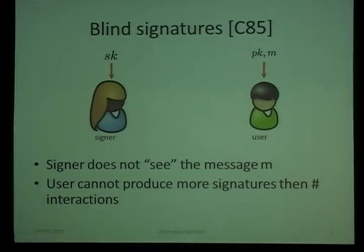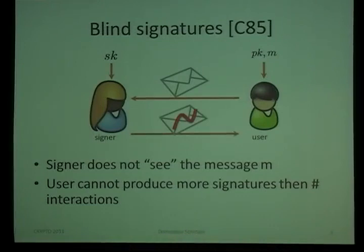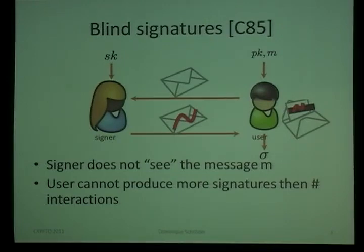Our solution works as follows: the user sends a carbon copy envelope, the signer then signs it, and the signature goes through the envelope onto the message. The user can then recover the message out of the envelope and output the signature. Since the envelope hides the message completely, the signer does not see what he's signing. On the other hand, the user cannot copy the signature to another document.